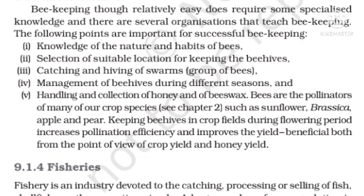The following points are important for successful beekeeping: 1. Knowledge of nature and habits of bees. 2. Selection of suitable location for keeping the bee house. 3. Catching and hiving of swarms. 4. Management of the bee house during different seasons. 5. Handling and collection of honey and beeswax. Bees are pollinators of many crop species such as sunflower, brassica, apple, and pear. Keeping a bee house in crop fields during flowering period increases pollination efficiency and improves both crop yield and honey yield.